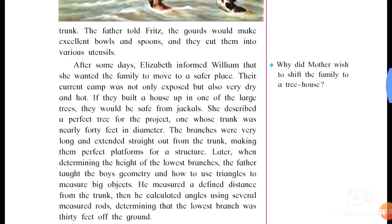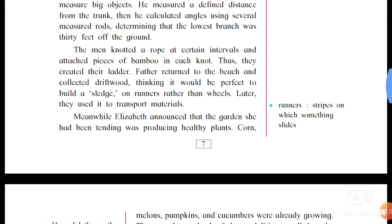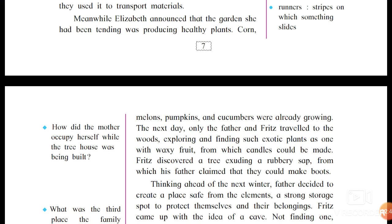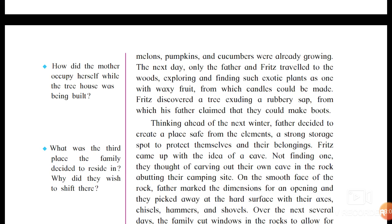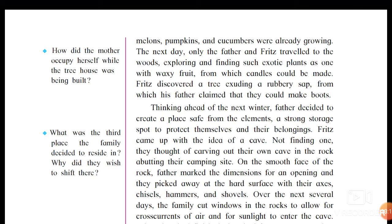Why did the mother wish to shift the family to a tree house? Because their current camp was not only exposed but also very hot and dry, and was not safe from animals. How did the mother occupy herself while the tree house was being built? She occupied her time with farming — corn, melons, pumpkins, and cucumbers were already growing. What was the third place the family decided to reside in, and why? The third place was a cave; they wished to shift there because winter was coming and they needed a warmer place.